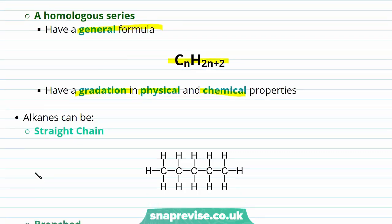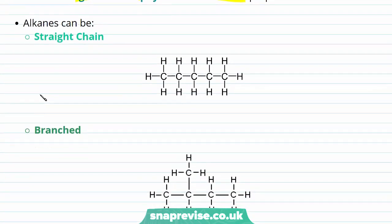Alkanes can be straight chain, and by straight chain we mean exactly that — there's a straight chain of carbon atoms. So here we have a straight chain alkane. This has five carbons. It is pentane as we saw above.